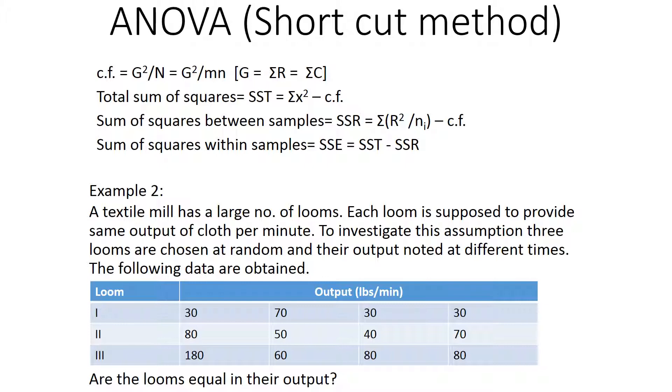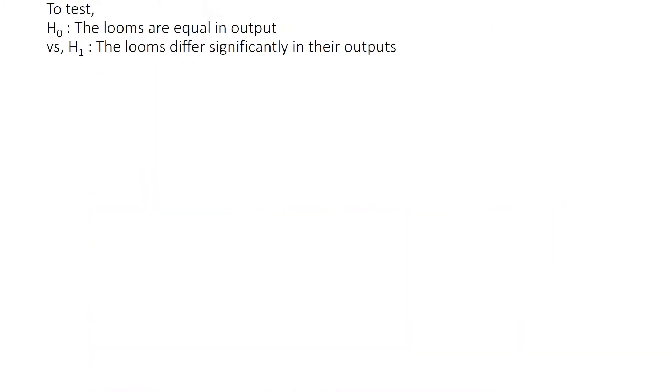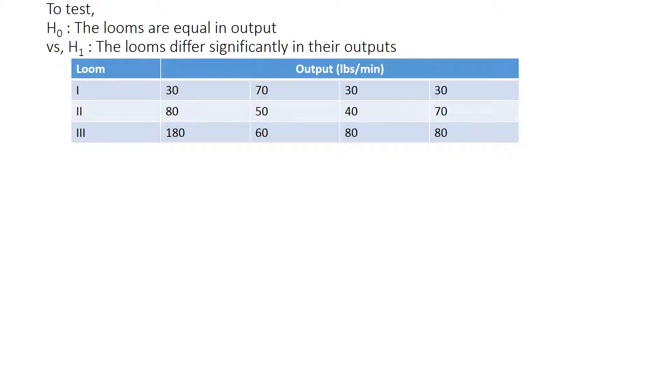Let's assume and find out. We have to test. H0: The three looms have an equal amount of output. There is no difference between the three looms. Or H1: The looms differ significantly in their output. Let's see which one of our hypothesis is true.